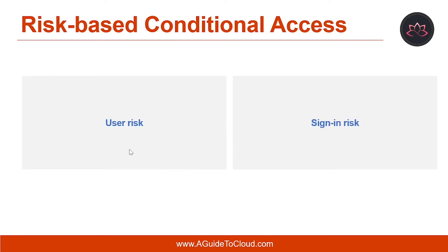So what is risk-based conditional access? Organizations with Azure AD P2 licenses can create conditional access policies incorporating Azure AD Identity Protection risk scenarios, including user risk and sign-in risk. With user risk, Microsoft works with researchers, law enforcement, various security teams at Microsoft, and other trusted sources to find leaked username and password pairs. The user risk policy may be configured through conditional access or Azure AD Identity Protection.